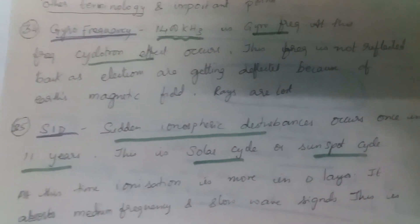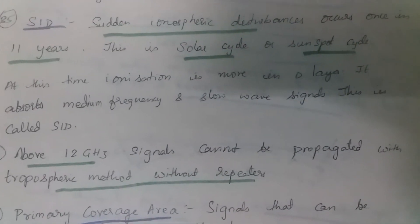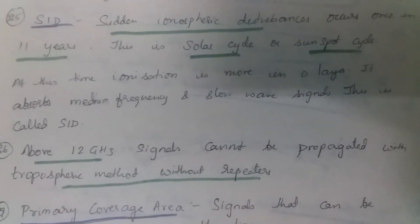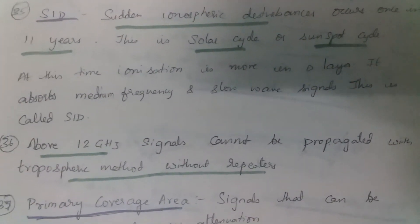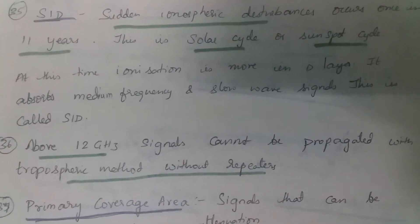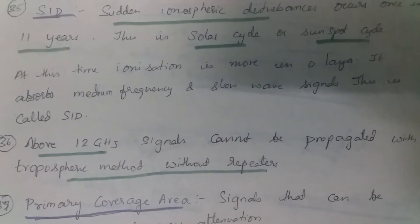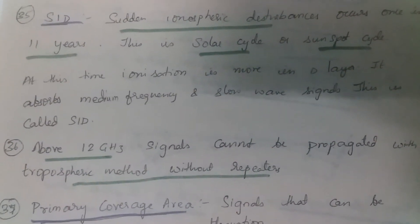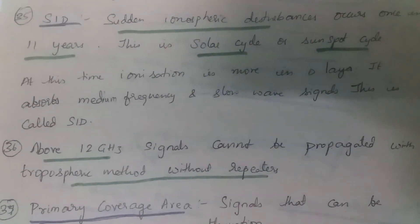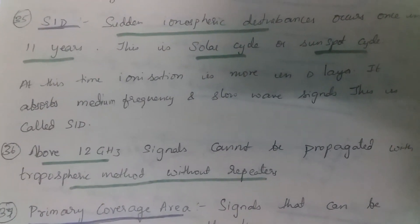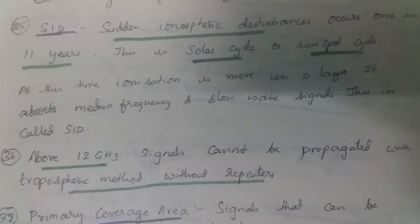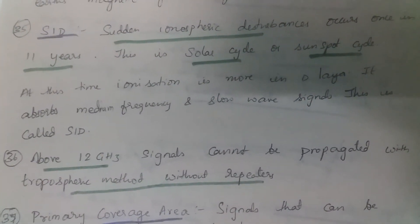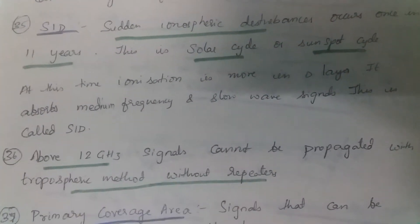SID — Sudden Ionospheric Disturbances — occur once in 11 years. This is called the solar cycle or sunspot cycle. At this time, ionization is more in the D layer, and it absorbs medium frequencies and short wave signals. This is called SID.